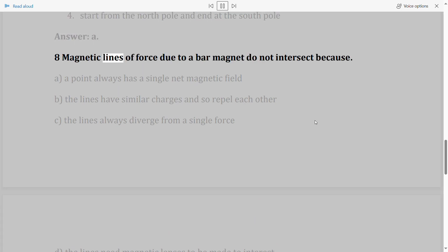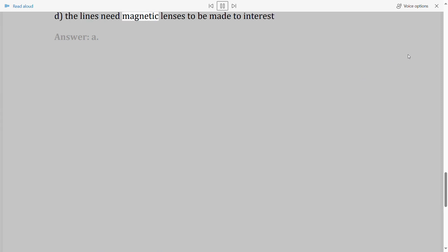Question 8: Magnetic lines of force due to a bar magnet do not intersect because A. A point always has a single net magnetic field, B. The lines have similar charges and so repel each other, C. The lines always diverge from a single force, D. The lines need magnetic lenses to be made to intersect. Answer: A.